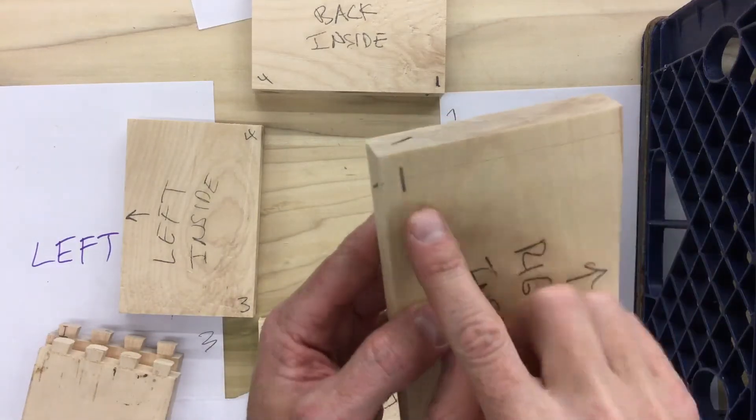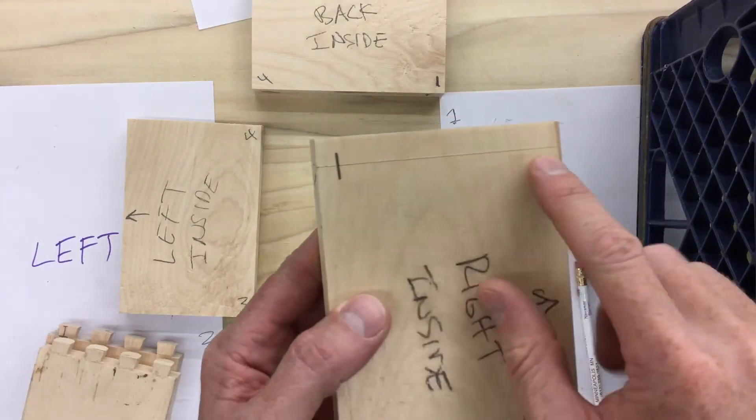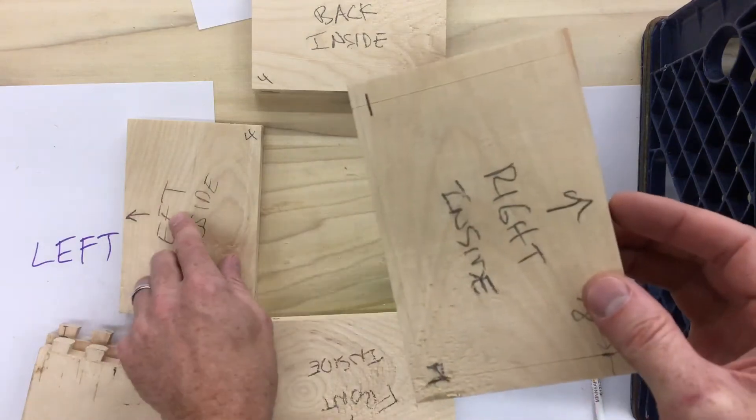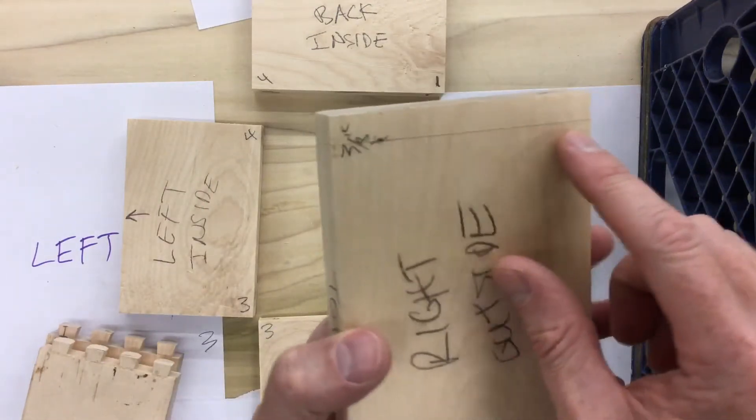In this video, I'm going to show you how to score your wood or cut a line around the right and the left sides of your box.